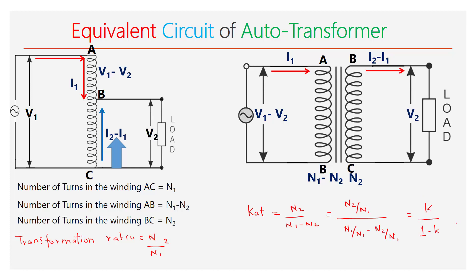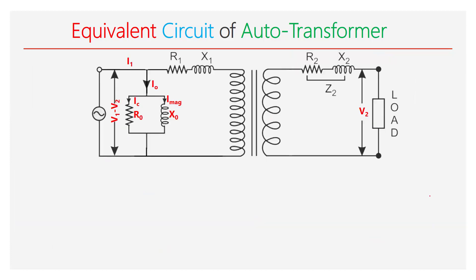This is the equivalent circuit of the autotransformer before shifting. The number of turns on the primary side is N1 minus N2 and on the secondary side is N2. Here R1 and X1 are the resistance and reactance of the primary circuit. R2' and X2' are the resistance and reactance of the secondary circuit referred to the primary.